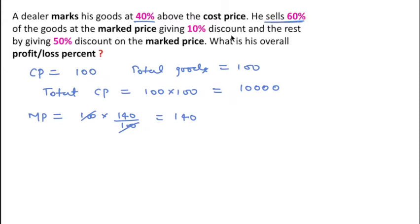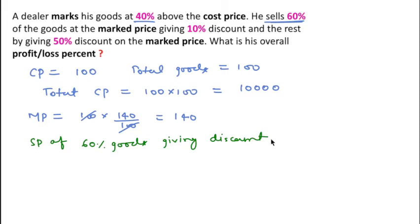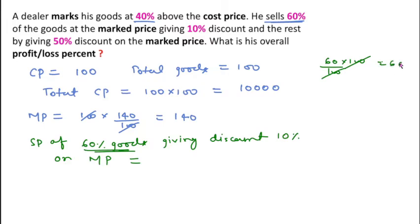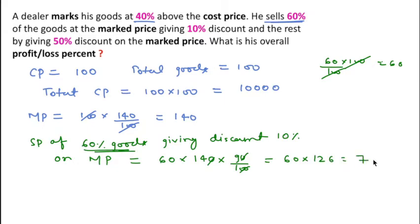According to the question, he sells 60% of the goods at the mark price giving 10% discount. So SP of 60% goods with 10% discount on MP: 60% of 100 goods means 60 goods, and mark price of one good is 140. Giving 10% discount means 90% of 140. So we can write 60 into 126, which equals 7560.